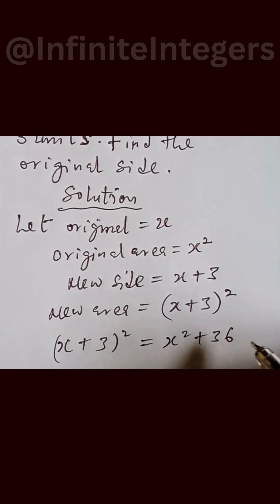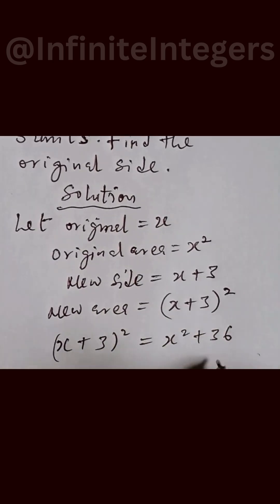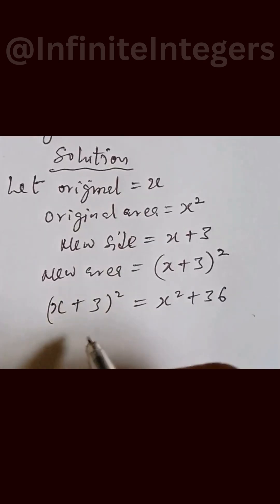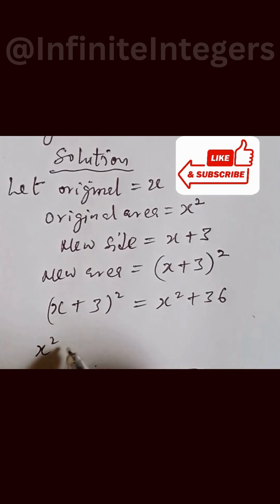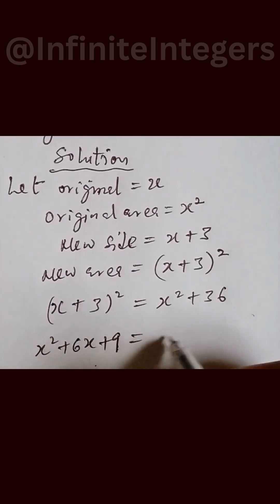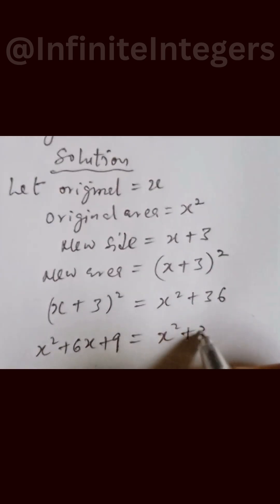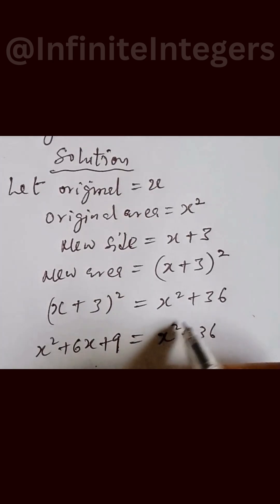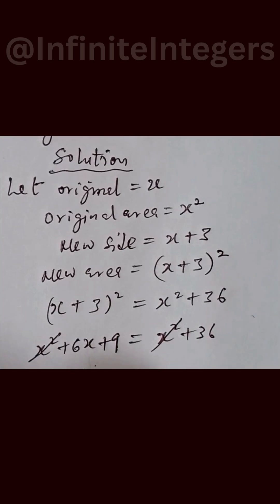From here we expand the left hand side and that gives us x squared plus 6x plus 9 equals x squared plus 36. So from here this cancels out with this, so we have 6x plus 9 equals 36.